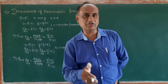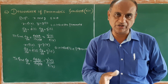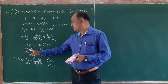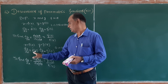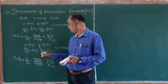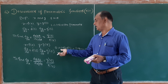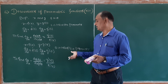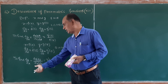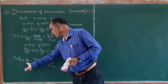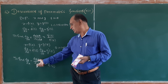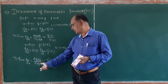So x, y, and theta — the parameter — put them in. Differentiate with respect to theta. Then to find dy/dx, use the relation: dy/dx equals dy/d(theta) divided by dx/d(theta).